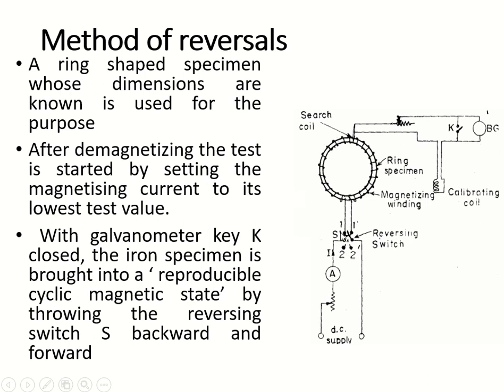You have to suddenly throw the switch to the forward position (1, 2, 1-dash, 2-dash), then again suddenly reverse the switch to the cross position, then suddenly reverse back to the normal position. You have to do this 10 or 20 times in order to produce a cyclic magnetic state. Cyclic magnetic state means the flux linkage will be changing. When the current reverses direction, there will be a change in flux linkage, and only then can the ballistic galvanometer measure that change.